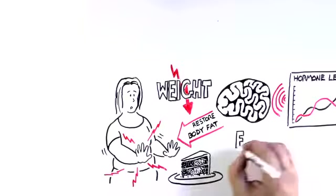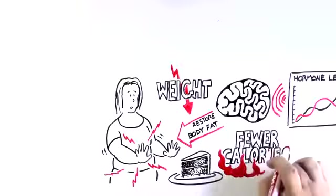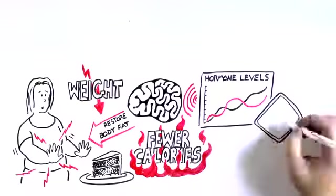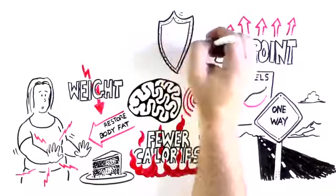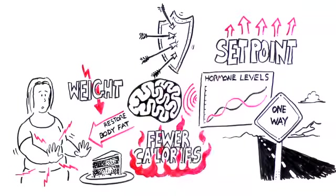She feels hungrier. And although she doesn't know it, she's also burning fewer calories than before. You see, set point is usually a one-way street. Once it's been elevated, the brain works to defend it, just as vigorously as it would a lower set point.